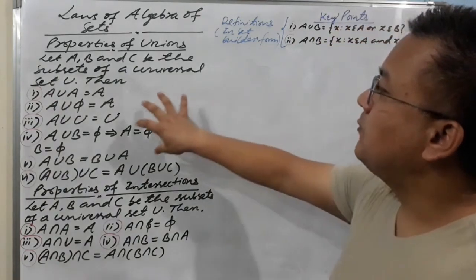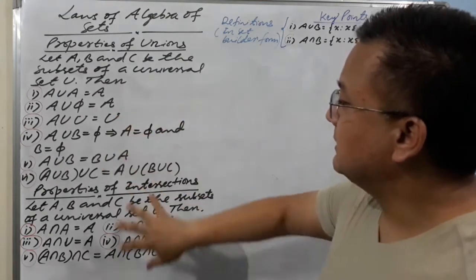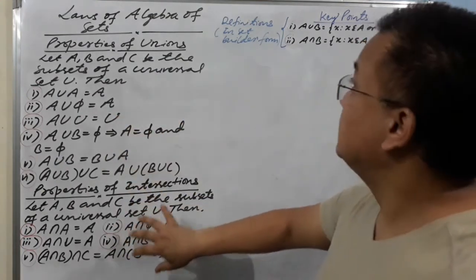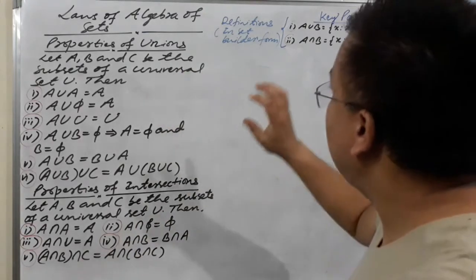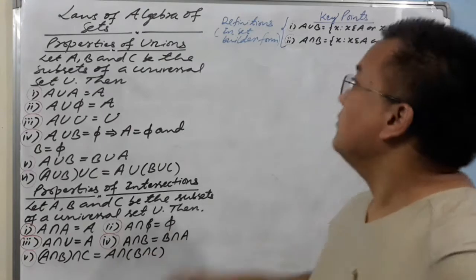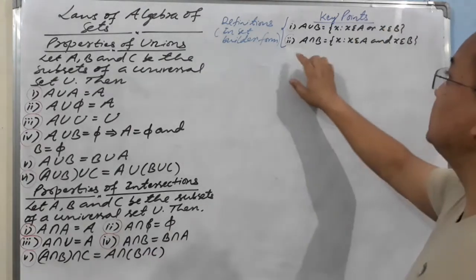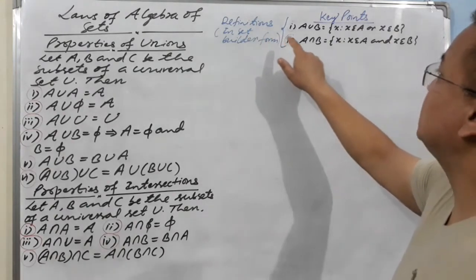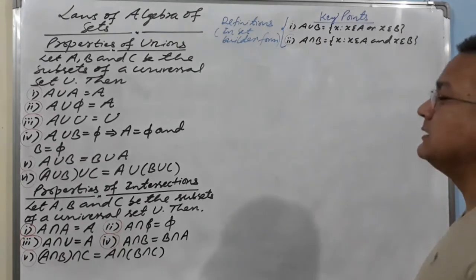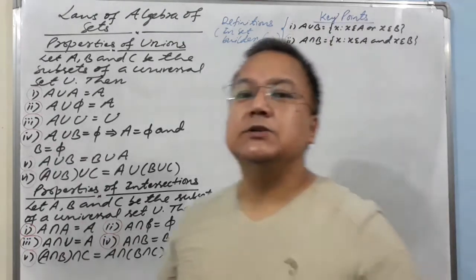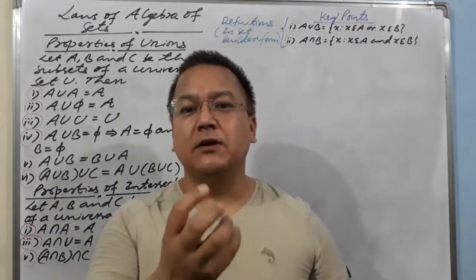Before moving into the proofs of the properties of the union — here are all the properties of unions and all the properties of intersections — we are going to prove these properties. Before going to prove the properties, we have to see the key points. The key points here are definitions. We need the definition of A union B and definition of A intersection B for today's topic.